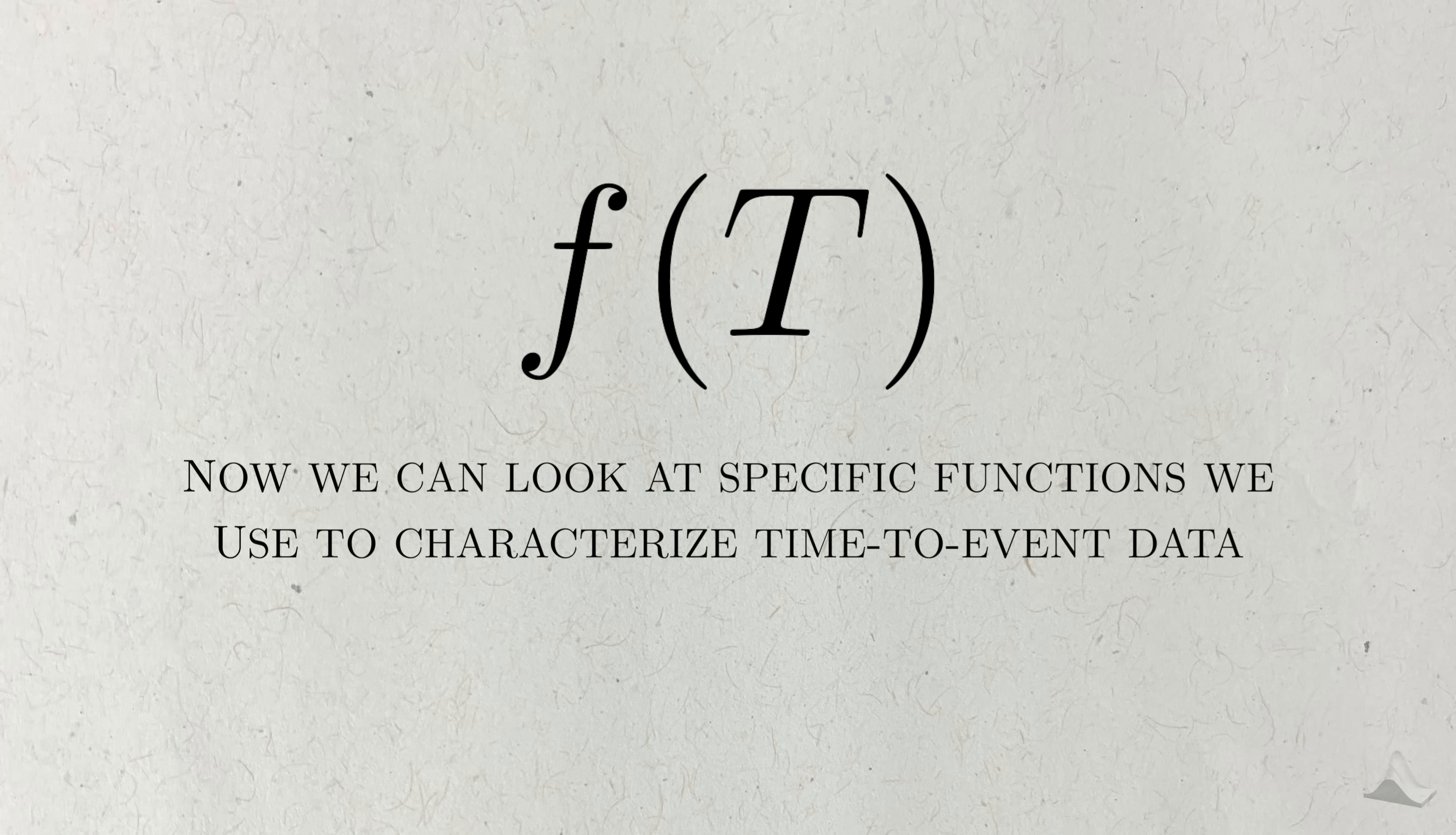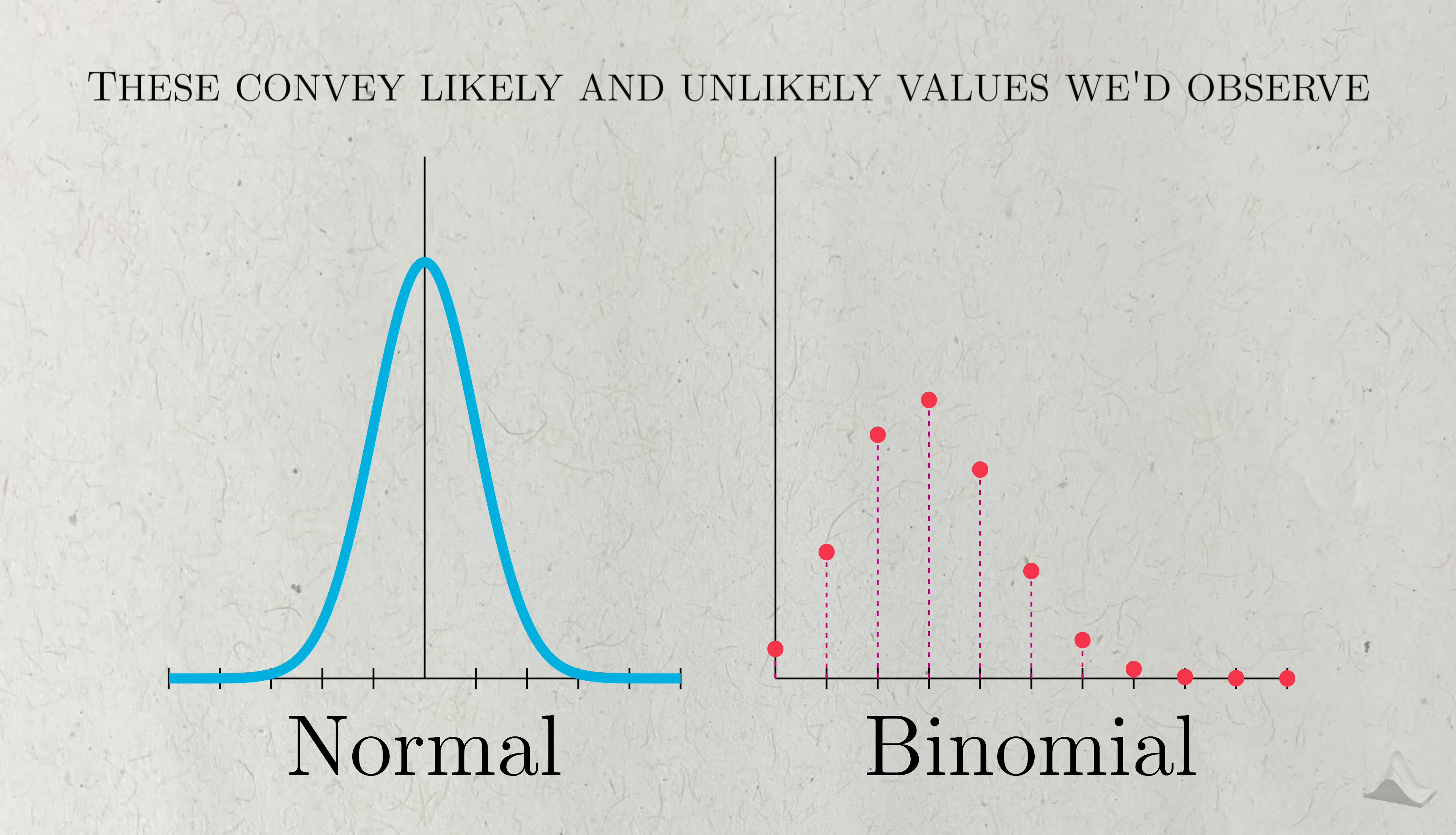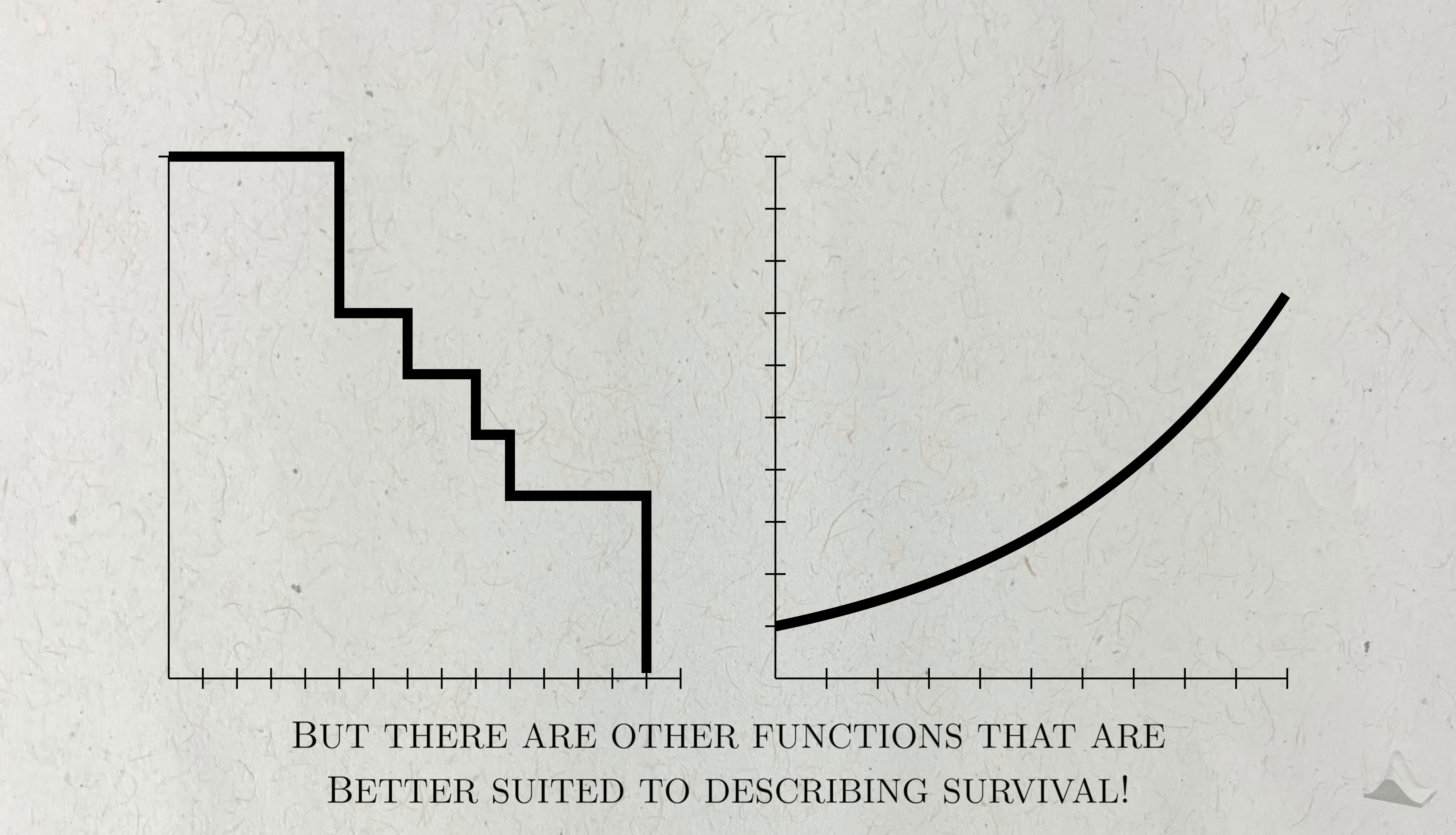Now that you know a bit about time to event data, we can talk about the specific functions that statisticians use to study and characterize this type of data. With more basic types of outcomes, like blood pressure or the presence of a disease, we're often interested in characterizing the randomness in the data in a population. We usually do this with the probability distribution, like a normal or a binomial distribution. If we know the distribution of the outcome, then we'll know what values are likely or unlikely. With time to event data, we could characterize it with the probability distribution, but it's just not as useful to know what times are likely or unlikely. There are other functions that can be derived from this distribution that are useful.